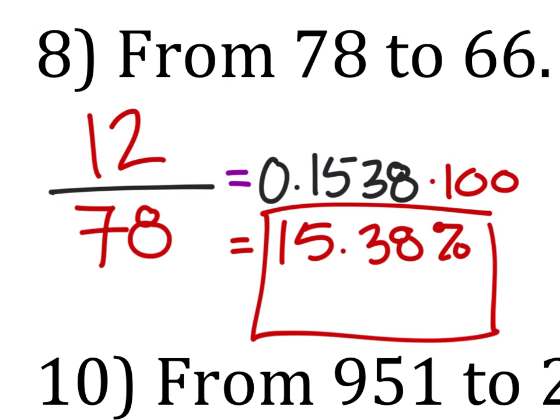All right, if you write this on the test, you're going to lose a point because it did say to indicate whether it's an increase or decrease. This went from something big to something smaller, so it's a decrease.